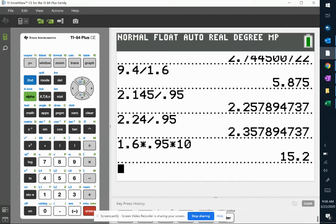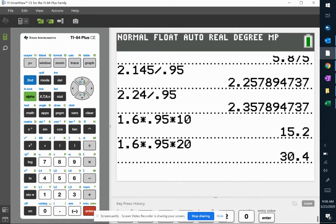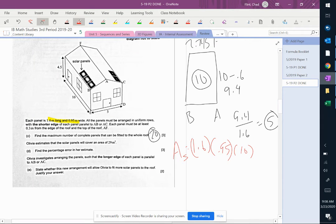I mean, 15.2 times, sorry, times 20 of them - 30.4. Let me fix that.